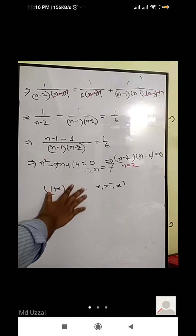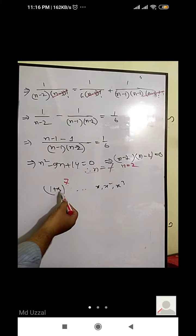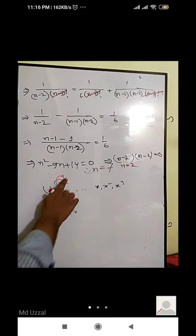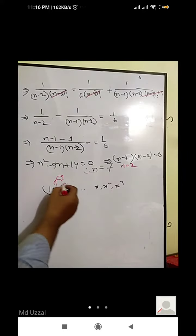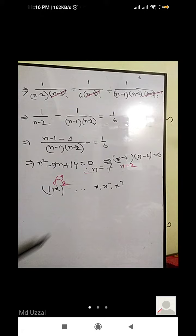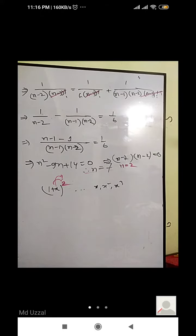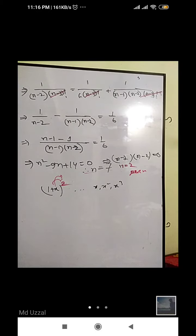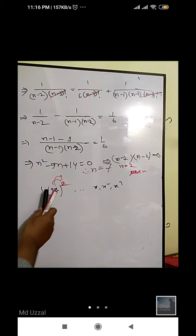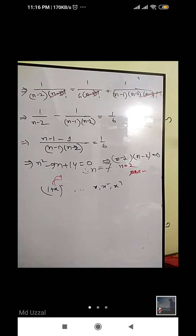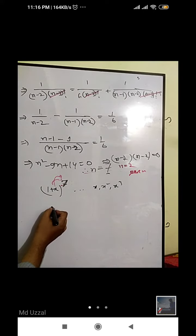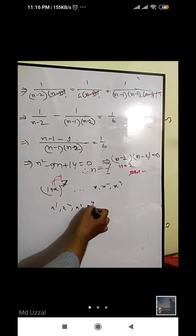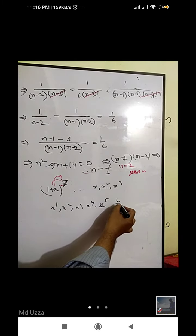Let's say that we have 7. The result is the power from 7, which gives 7, then it becomes 1, 2, 3, 4, 5, 6, 6.